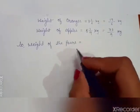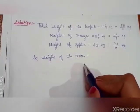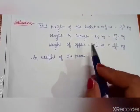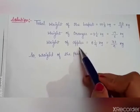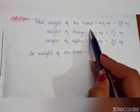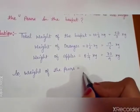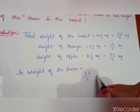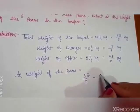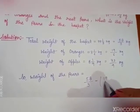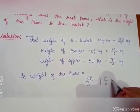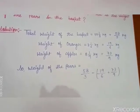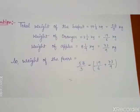Weight of apples is 8 whole 1 by 9 kg, that is 73 by 9 kg. We have to find the weight of pears. To find the weight of pears, subtract the weight of oranges and apples from the total weight of the basket. Total weight of the basket is 58 by 3 kg. Subtract the weight of apples and weight of oranges from this.